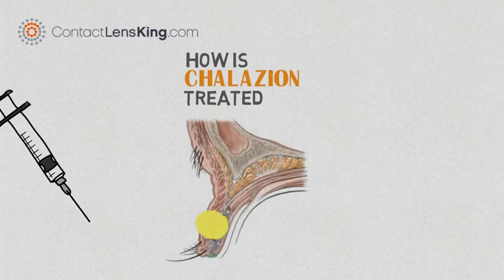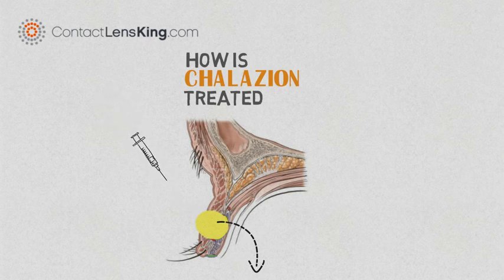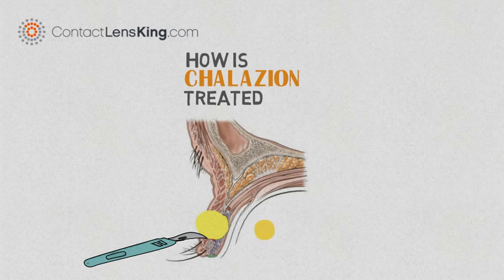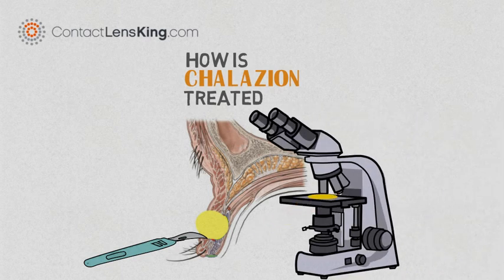An alternate treatment may include injecting corticosteroid into the Chalazion to promote better drainage. In cases where this disorder occurs, doctors may remove tissue and test it to rule out the existence of a tumor.